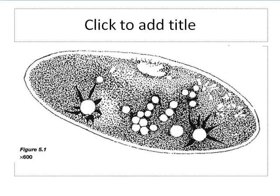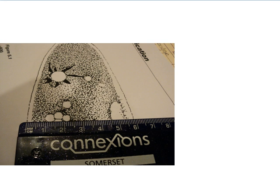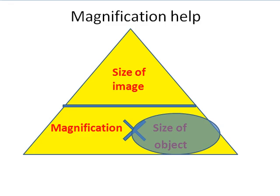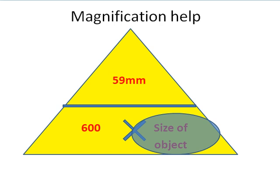Here's a different example. We've got a single-celled organism here, and down in the bottom left-hand corner we've got magnification 600 times. We've got our ruler, so we can measure — let's have a look at the width of the organism. We measure that at 59mm, and we know the magnification is 600 times. So we can actually work out the size of the object.